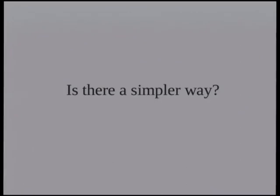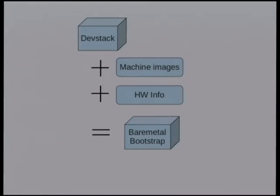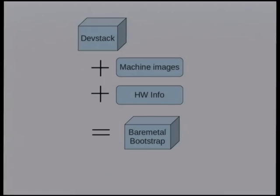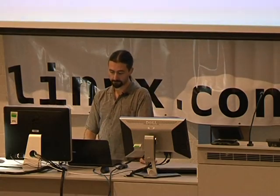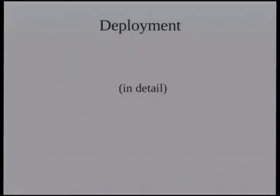That would take a lot of work to set up right now - it's not quite as automated as some of the other stuff. Is there a simple way to do this if you just want to play with it in the lab? Yes. DevStack is an opinionated bash script that stands up everything you need to run OpenStack on one host in the simplest, quickest way. Starting with DevStack, you load some customized images - basically Ubuntu cloud images that we've changed a little bit. You inform DevStack of your hardware: Mac address, number of CPUs, amount of RAM, and so on. This is the bare metal bootstrap node, which you use to bootstrap all the other hardware that's currently powered off.